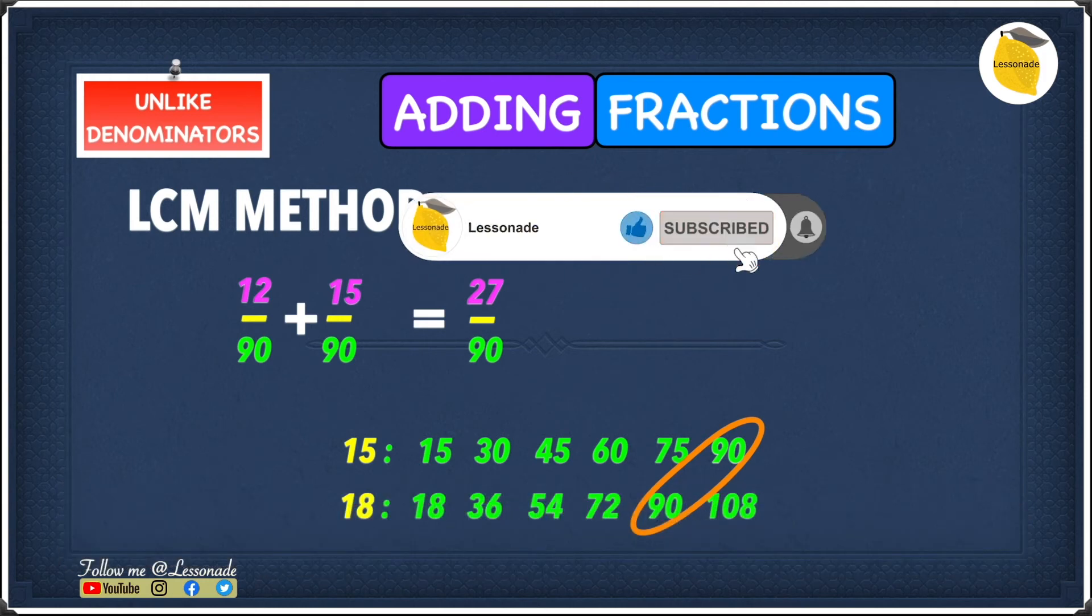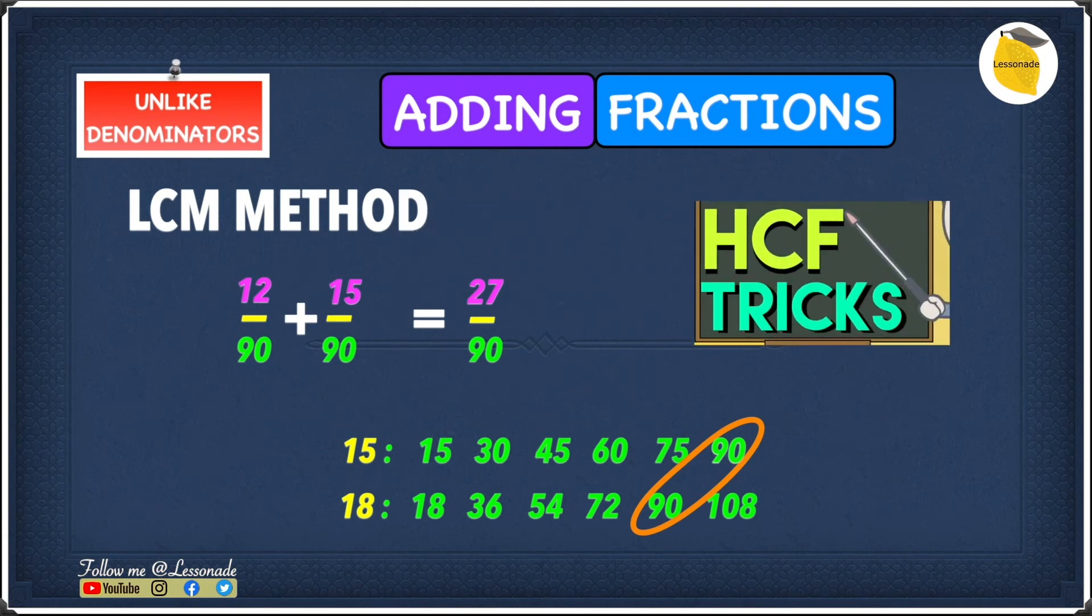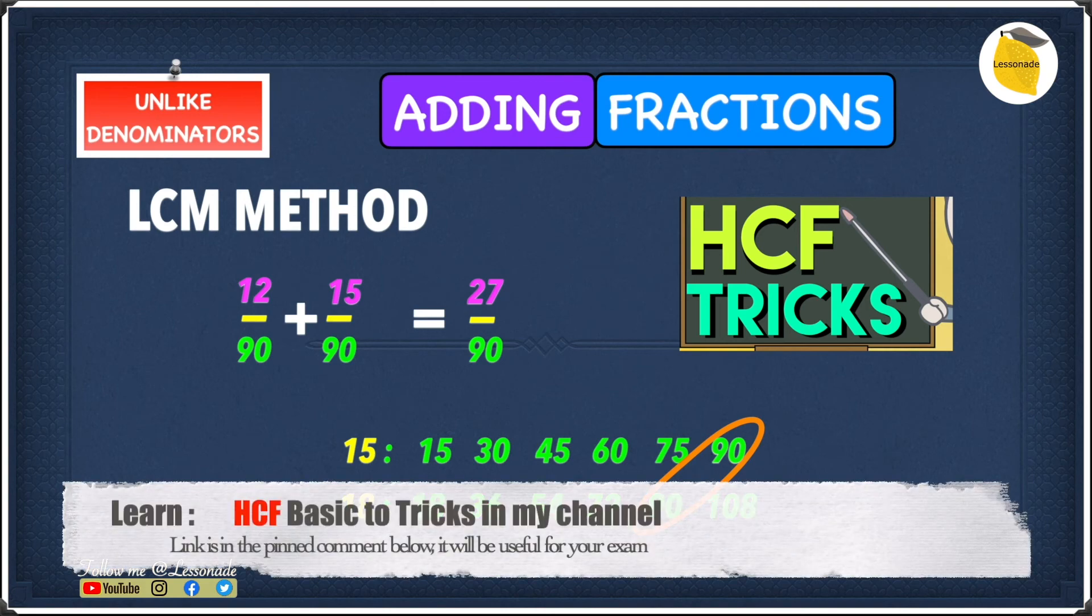But if you notice with our answer, you can see that 27 and 90 have a highest common factor. Because they have a highest common factor, this means we can simplify this fraction. If you guys want to know more about finding the highest common factor, I've got a video on that. The link is in the description below.